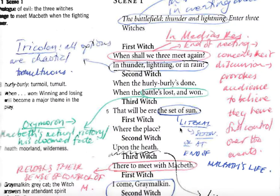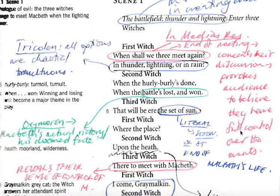The first witch then says, 'When shall we three meet again?' This is a literary technique called in medias res, which comes from Latin and means 'in the middle of things.' We are joining the action as it's already unfolding — we've arrived at a scene that is already happening and actually coming to its end. It's the end of the meeting between these three witches, which is why the first witch asks this question. This conceals their discussion and is designed by Shakespeare to provoke the audience to believe that the witches have full control over the events that follow.